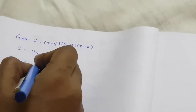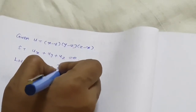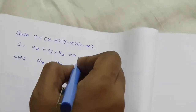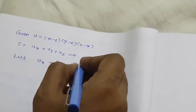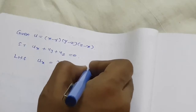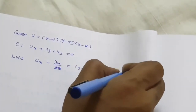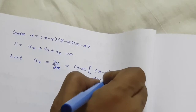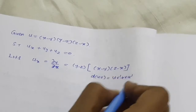For the first step, we find ∂u/∂x, that is the partial derivative of u with respect to x. With respect to x, you have to keep y and z as constant terms. So y minus z remains, and we differentiate the remaining (x minus y) into (z minus x). This is of the form u into v, so we apply the derivative formula: (uv)' = uv' + vu'.